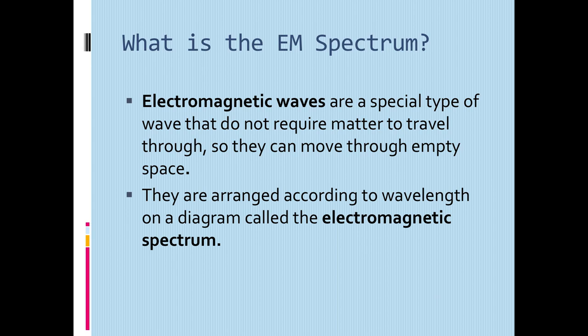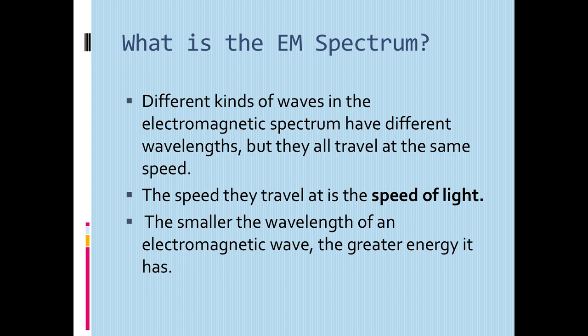EM waves are a special type of wave that do not require matter to travel through — they can move through empty space unimpeded for the most part. They are aligned according to wavelength on a diagram called the EM spectrum. We've sent waves out to space to try to communicate with aliens — you can do some Google searching on the messages we've sent from Earth. Different kinds of waves in the EM spectrum have different wavelengths, but they all travel at the same speed — the speed of light. The smaller the wavelength of an EM wave, the greater energy it has, like with the gamma rays.